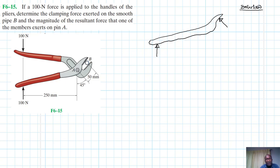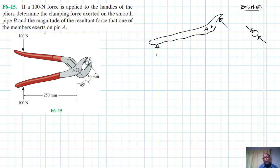We have this point here which is point A — this is point A where we also need to find the resultant force. We have this pipe; the forces from the pliers are being exerted on this pipe. These forces are equal in magnitude and opposite in direction. So this point is B. We'll call the forces at B simply B, and this side is also B.